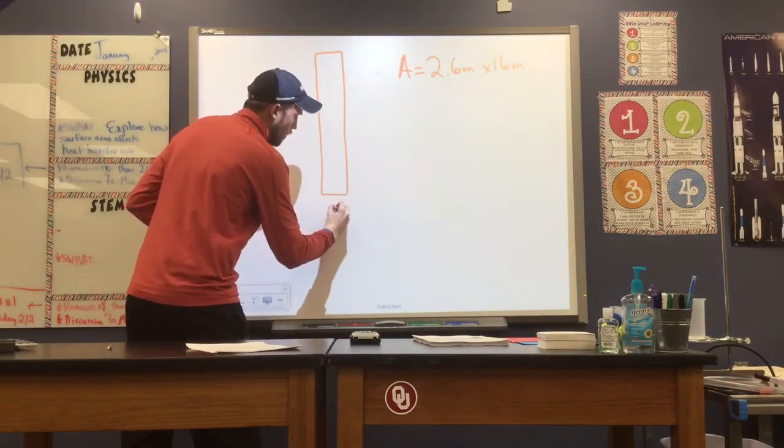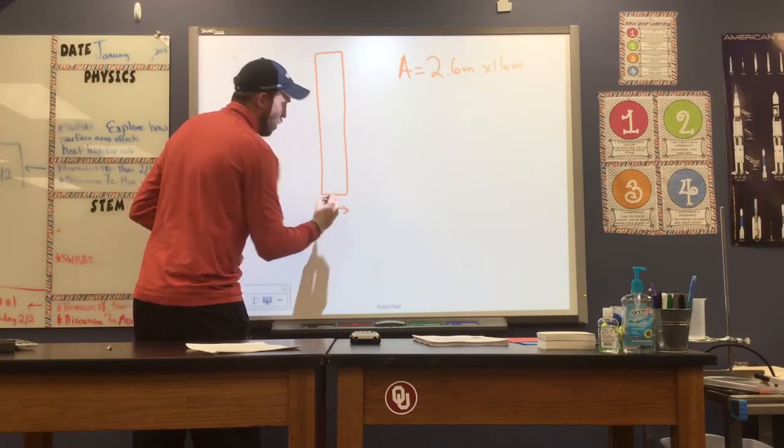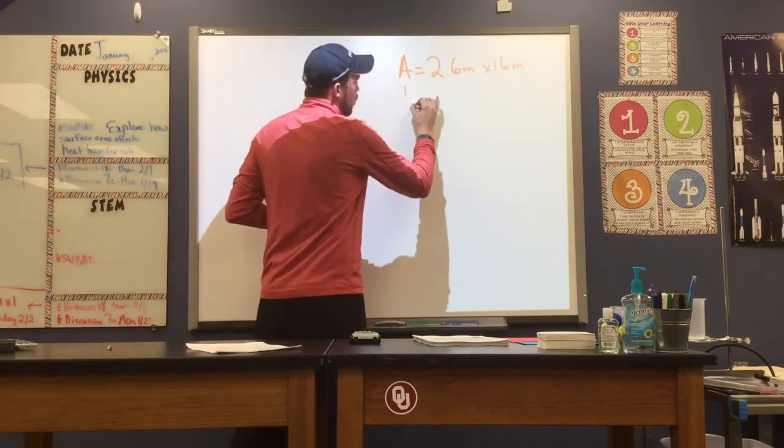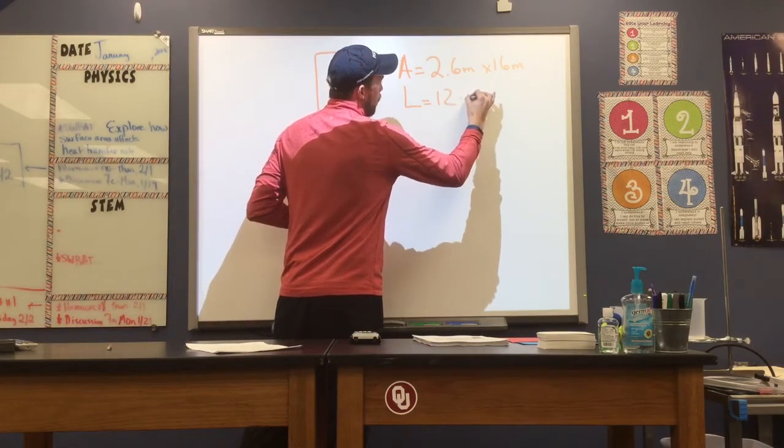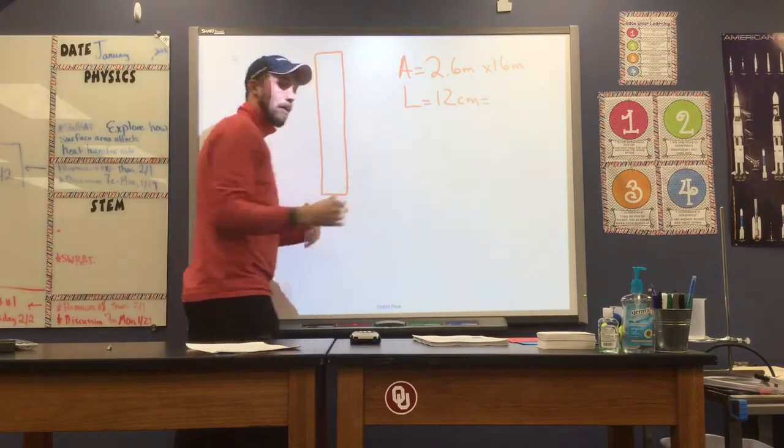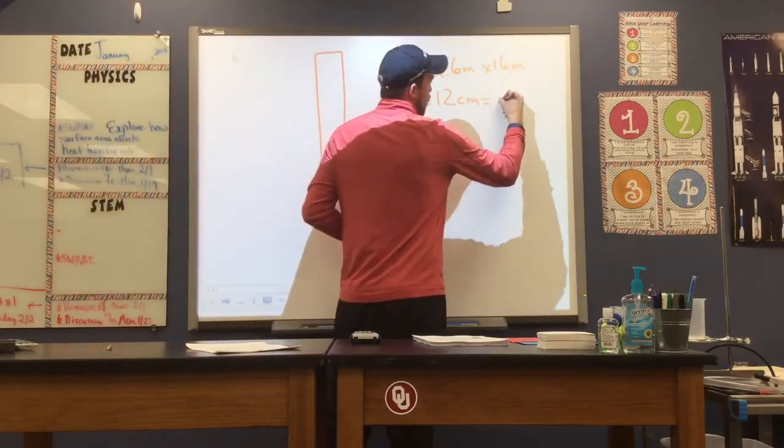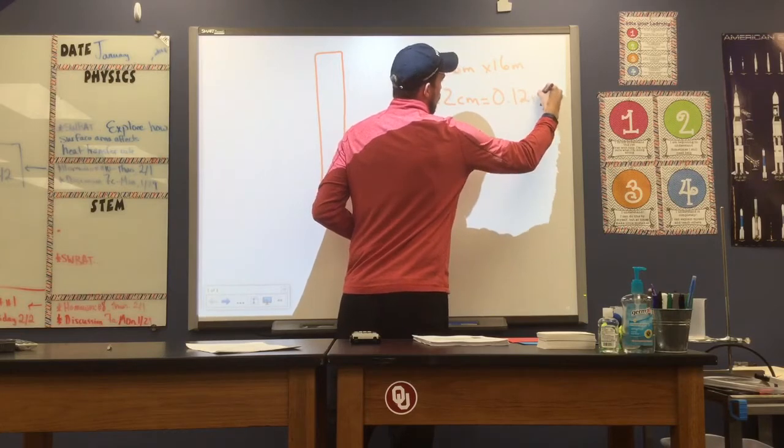We're also told the material is about 12 centimeters thick. So the length that our heat is going to be traveling or the thickness of our wall is 12 centimeters. I'm going to go ahead and convert that to meters. That way when I plug it into our equation for heat transfer, we're in the units that we need. 0.12 meters.